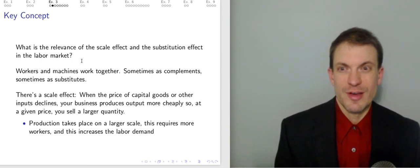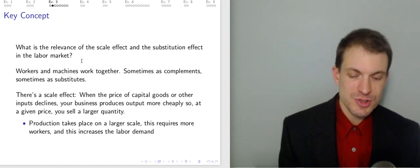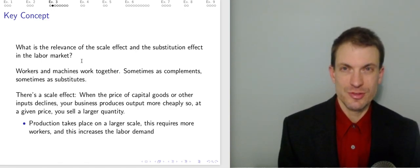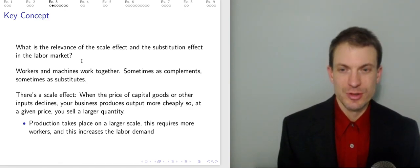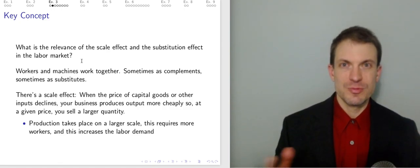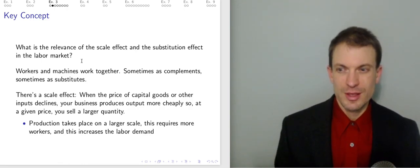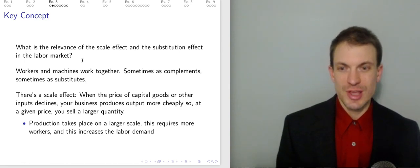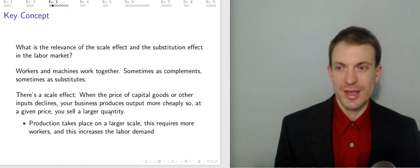What's the relevance of the scale effect and the substitution effect in this market? We observe workers and machines work together — sometimes as complements, sometimes as substitutes. There's a scale effect in that when the price of capital goods or other inputs declines, the business produces outputs more cheaply, so it expands production, produces greater output, and sells a larger quantity. With production taking place on a larger scale, this requires more workers and therefore increases labor demand. So the scale effect is like workers and capital being complements.